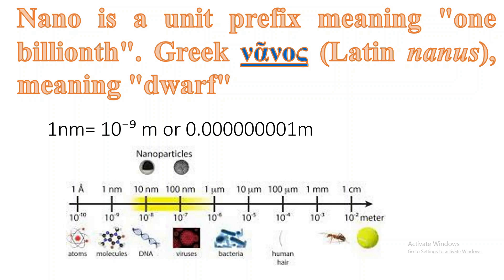The word 'nano' comes from Greek, meaning 'dwarf.' So 1 nanometer is approximately 10 raised to minus 9 meters, which is equal to 0.0000001 meters.